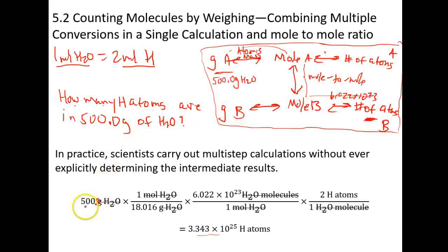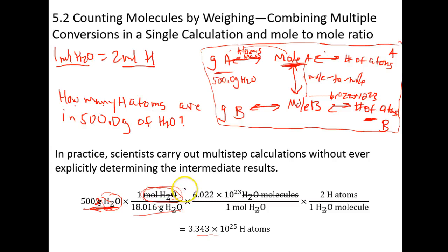So, they took 500 grams and converted grams of water to moles of water using the mass of water — 18.06 grams per mole, so 18 goes on the bottom. That gets you to moles of water. Then use the mole-to-mole conversion: one mole of water to two moles of hydrogen, with one mole of water on the bottom to cancel. That gets you to moles of hydrogen.